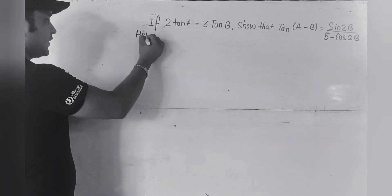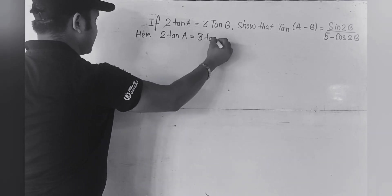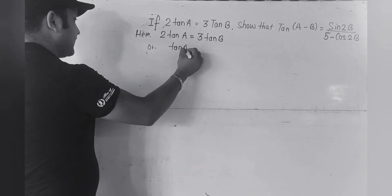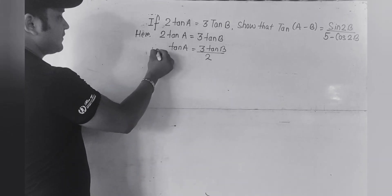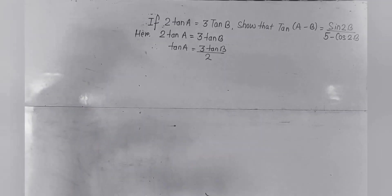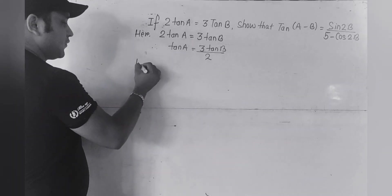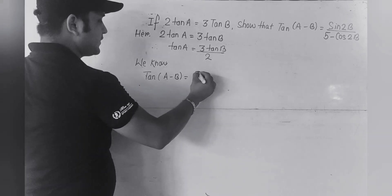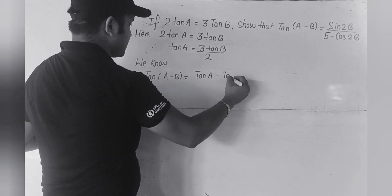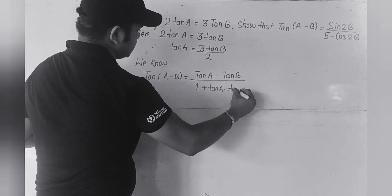Here you have been given that 2tanA = 3tanB. So tanA = 3tanB/2. That is the value of tanA from the given information. Now we have been told to prove tan(A-B). We know the formula: tan(A-B) = (tanA - tanB) / (1 + tanA·tanB).